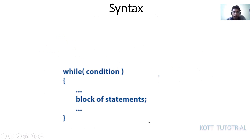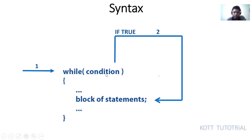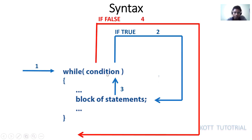This is how the syntax of a while loop looks like. During the execution, it will check for the condition. If the condition is true, it will execute the block of statements. And after the execution of the statement, it will again check for the condition. If the condition is still true, it will again execute the block of statements. This loop is going to continue unless the condition is false, and once the condition is false, it would be jumping out of the loop.